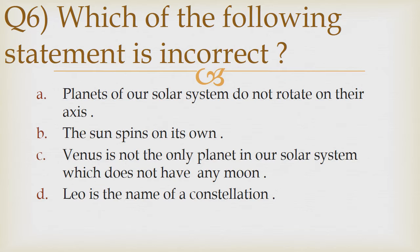Question number 6. Which of the following statements is incorrect? Option A: Planets of our solar system do not rotate on their axis. Option B: The Sun spins on its own. Option C: Venus is not the only planet in our solar system which does not have a moon. Option D: Leo is the name of a constellation. The correct answer is Option A — Planets of our solar system do not rotate on their axis.